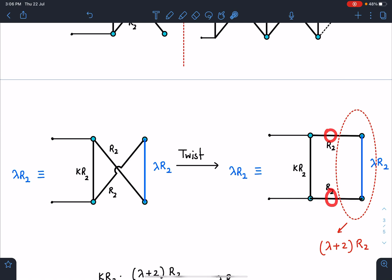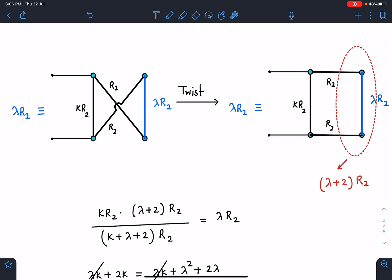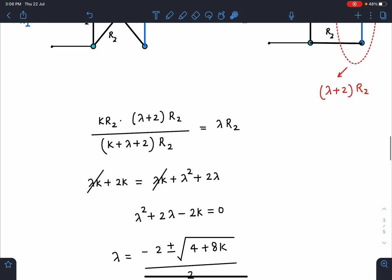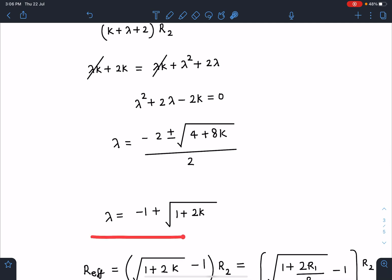Here this resistance, the blue one, is lambda R2, and R2, R2, R2. The equivalent is lambda R2. Now these three in series with this in parallel is equal to lambda R2. So I can write kR2 and this will become lambda plus 2 R2 divided by the sum of these two, and that is equal to lambda R2. So R2 gets cancelled, and when I simplify I get a quadratic equation in lambda in terms of k. If I write the root of it, one root is positive, one root is negative, so we have to choose the positive number. When I simplify, I get this lambda as minus one plus root of one plus two k.